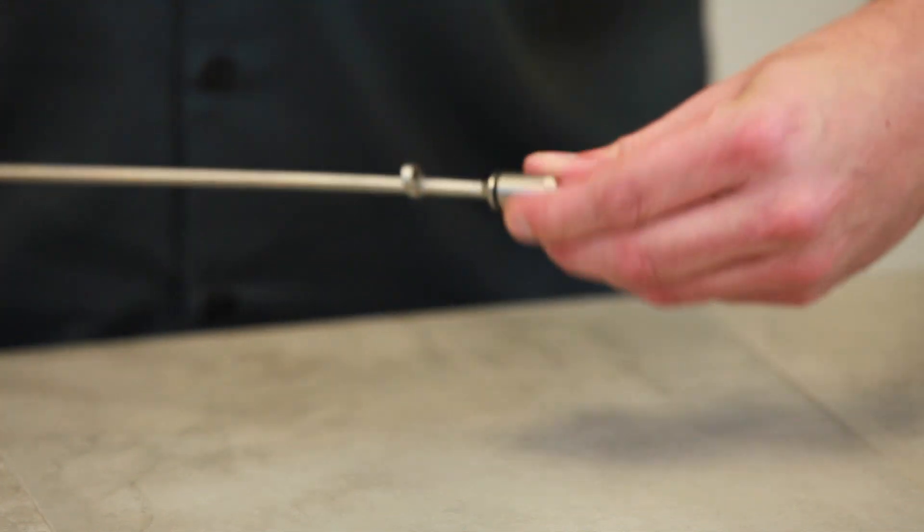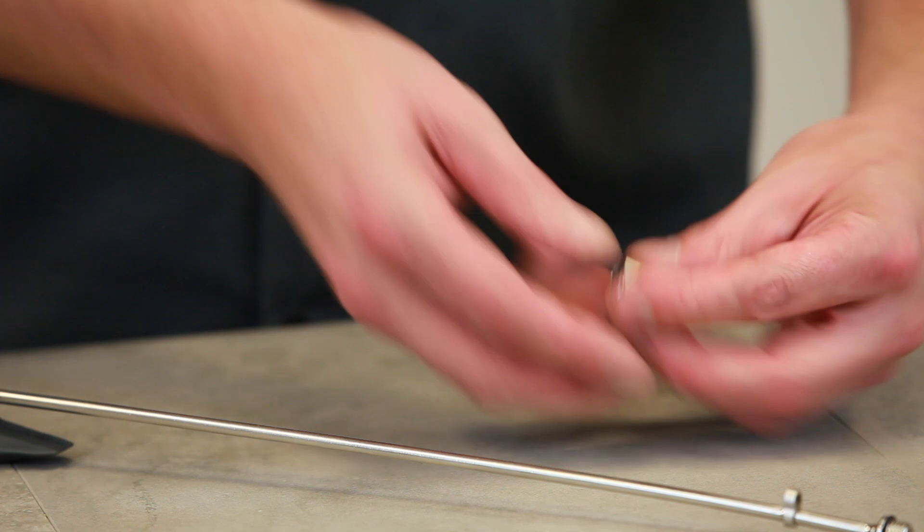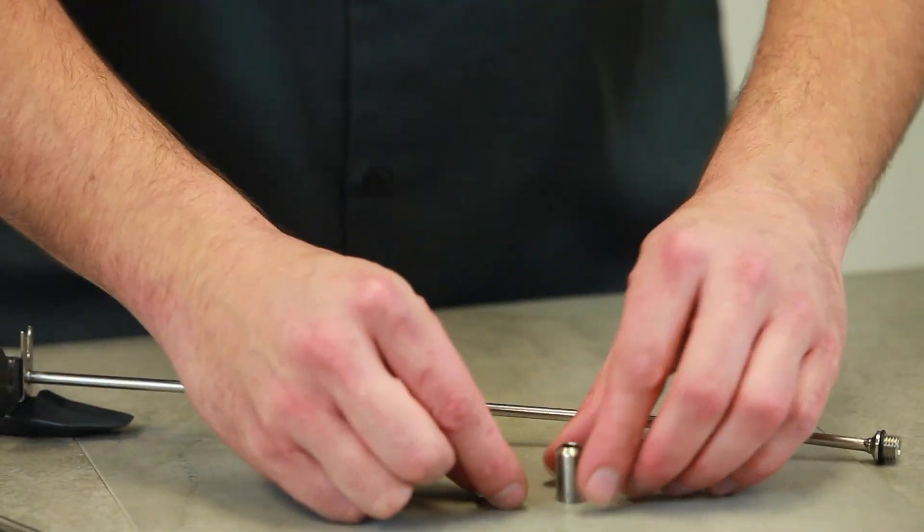The filling tip is also very easy to disassemble. Simply unthread the tip and remove the spring and internal poppet valve. You are now ready to clean and sanitize all the parts.